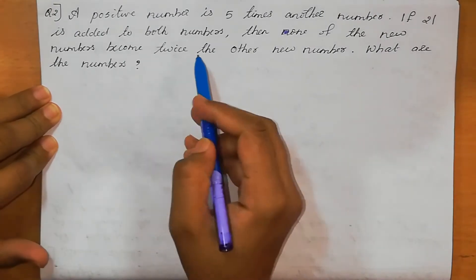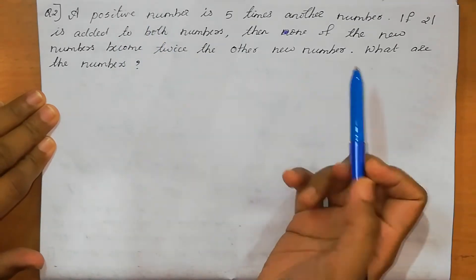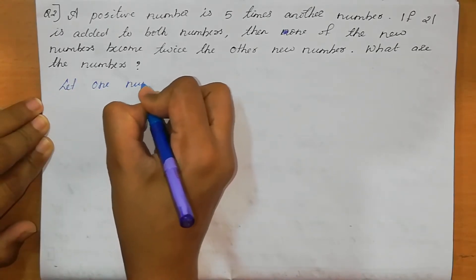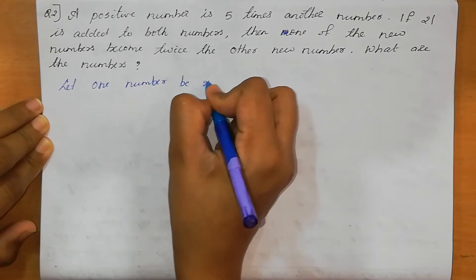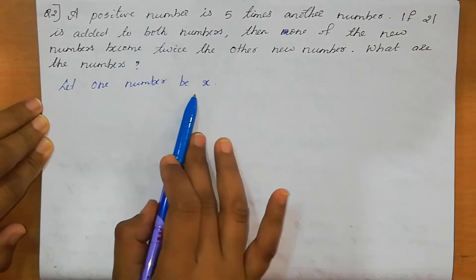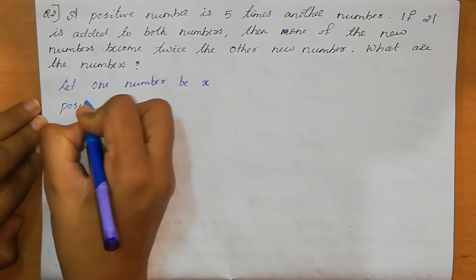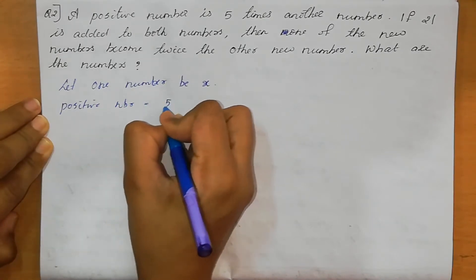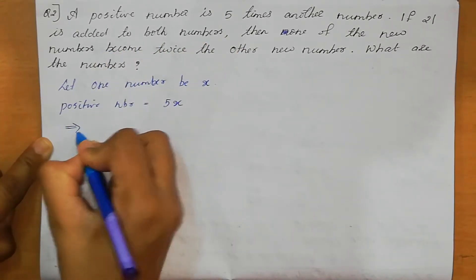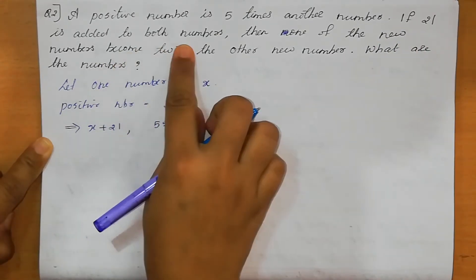Question number 2. A positive number is 5 times another number. One number we can take as X. So let one number be X. A positive number is 5 times another number, so positive number equals 5X. If 21 is added to both the numbers, X becomes X plus 21 and the second number becomes 5X plus 21.